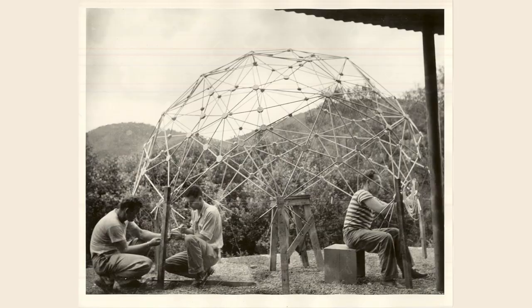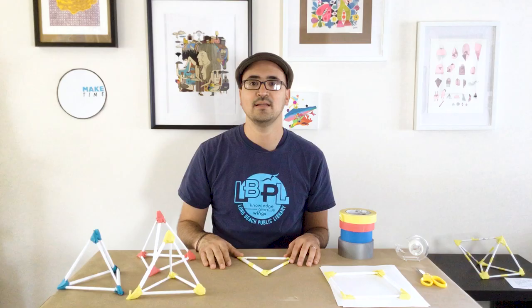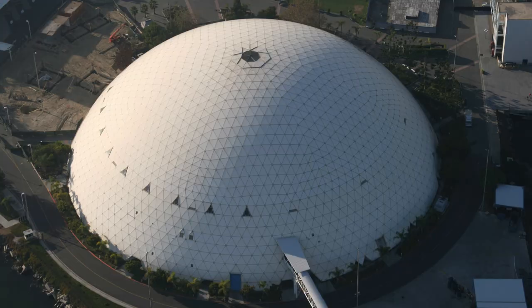Here's an example by famous architect Buckminster Fuller. In this example, him and his team are creating a structure similar to those seen in a playground. If you live in Long Beach like I do, you might recognize this next example. This is the geodesic dome that's next to the Queen Mary.